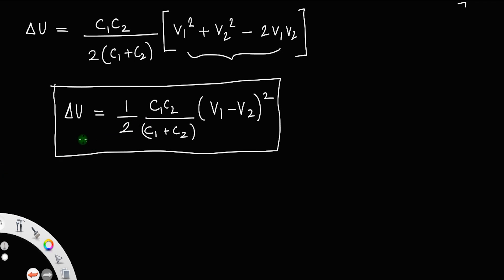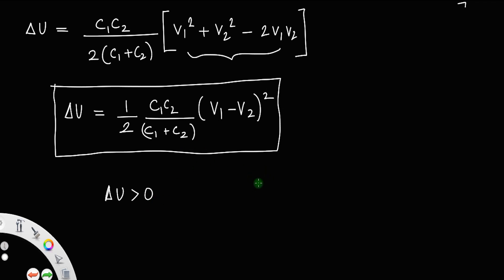Analyzing this expression: 1/2 is always positive, capacitance cannot be negative, and (v1 − v2)² is always positive regardless of sign. Therefore delta u is always greater than zero, meaning there is always a loss in energy. This implies the initial energy of the capacitors is always greater than the final energy — a certain amount of energy is always lost during redistribution.